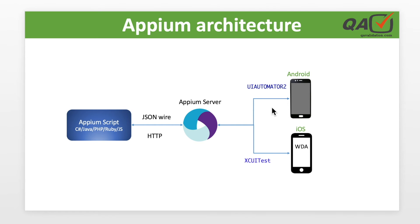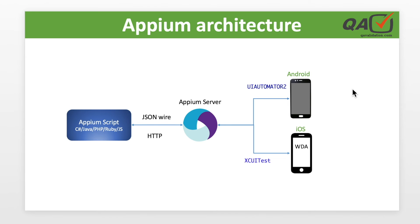Depending on the action, UI Automator 2 responds back. For example, if you click a button that navigates to another screen, the response is that new screen visible on your computer or mobile device. How does Appium know to send the request to Android specifically? That is determined by capabilities, which define where exactly the test should go and perform actions.